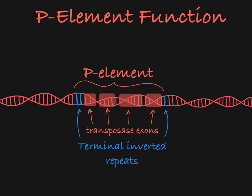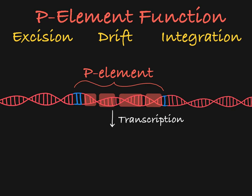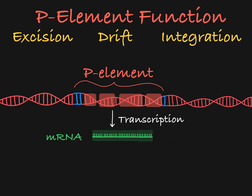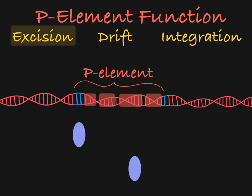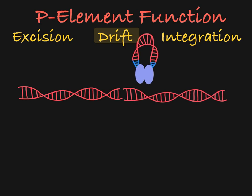So how does this P element jump from one part of the DNA to another? This process involves discrete steps called excision, drift, and integration. The gene is transcribed into RNA, and then a spliceosome removes the introns and splices the exons together. This mRNA is then translated into the polypeptide that folds into transposase. The transposase will recognize and bind to the terminal inverted repeats of the transposon and multimerize. It facilitates the excision of the entire transposon from the DNA.